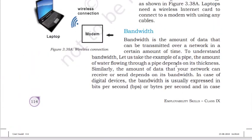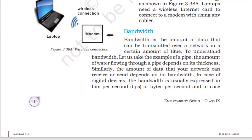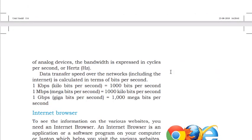Bandwidth is the amount of data that can be transmitted over a network in a certain amount of time. For example, if a wire can send 100 MB of data, that is the bandwidth of 100 MB. To understand bandwidth, think of a pipe: the amount of water flowing depends on the pipe's thickness. Similarly, if you have a bigger pipe, water flows in larger amounts; if you have a thinner pipe, water flow is less — and data bandwidth works the same way.